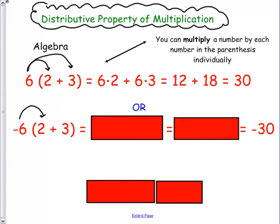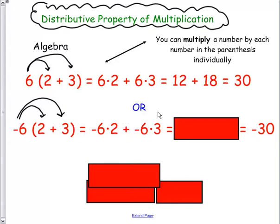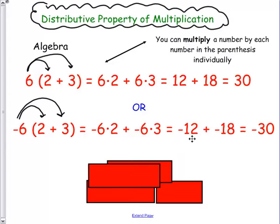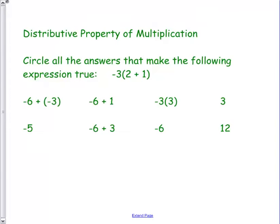Down here, you would multiply the negative 6 by each individually. So negative 6 times 2 is a negative 12, and a negative 6 times 3 is a negative 18. And when we're adding a negative with another negative, I have more negatives, so 30 negatives.